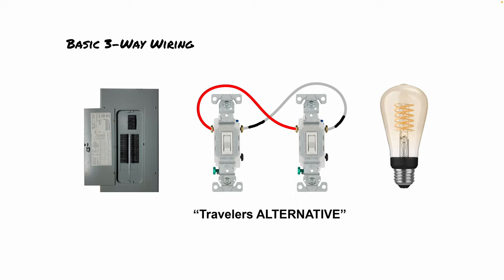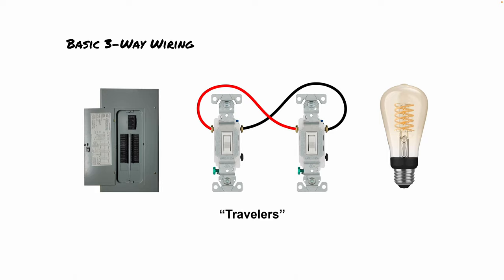The red wire is connected to the left terminal screw on both switches, and the black traveler wire is also connected to the same terminals on both switches. This isn't absolutely necessary for a three-way switch installation to work, but it is best practice to match these up. The reason is that if you ever have a four-way switch — three switches controlling one fixture — mismatched terminals will cause problems. On a three-way install it'll be fine, but ideally match the terminals from one switch to the other.